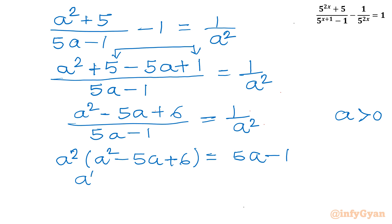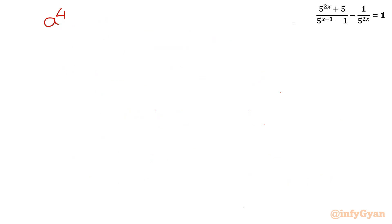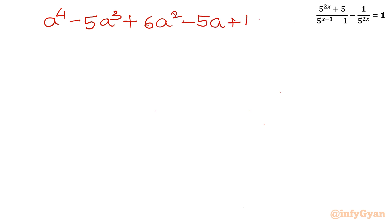Expanding: a power 4 minus 5a cubed plus 6a squared, then bringing 5a minus 1 to the left gives minus 5a plus 1, equal to 0. This gives us the quartic equation: a power 4 minus 5a cubed plus 6a squared minus 5a plus 1 equal to 0.